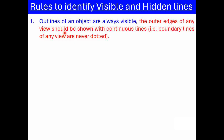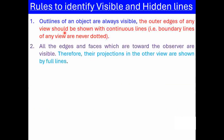Rule number 2: All the edges and faces which are towards the observer are always visible. Therefore their projections in the other views are shown by full lines.